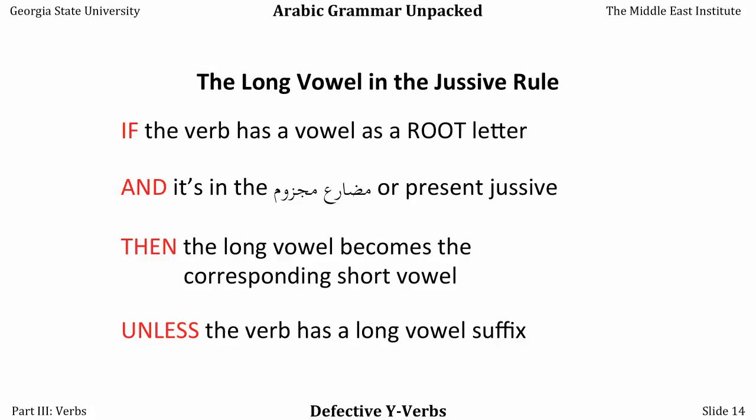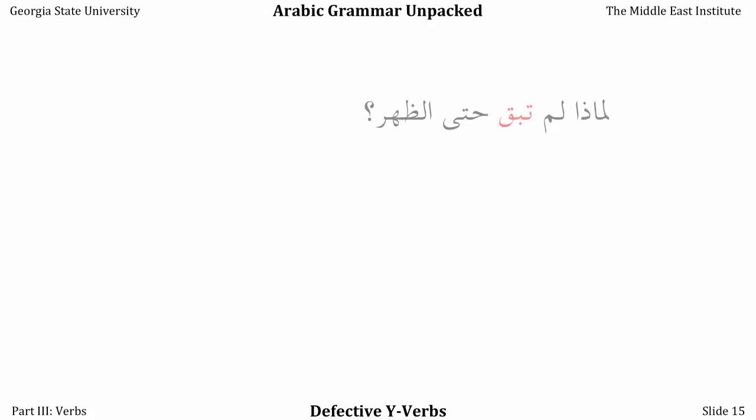Let's look at a few examples. Limadha lam tabqa hatta al-dhuhr? — Why didn't you stay until noon? The alif maqsura at the end of the verb has transformed into alif because of lam, and it looks like it's missing a third letter entirely. What's especially confusing for the intermediate student is that it's unclear which letter is missing — is it the second, third, or first letter, and which letter is that? That's why this particular set of verbs is such a challenge, especially in the majzoom and in commands. For the plural form: Limadha lam tabqaw hatta al-dhuhr? — here it's a little less unclear which letter is missing, but it's still confusing. So I can't emphasize enough learning and memorizing the most common vocabulary words in each particular pattern.